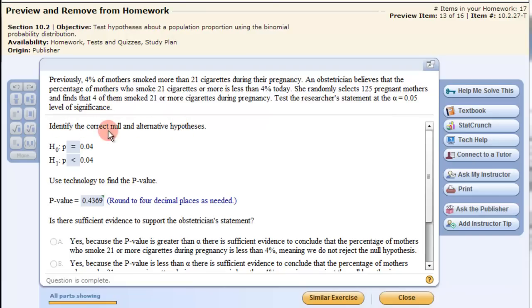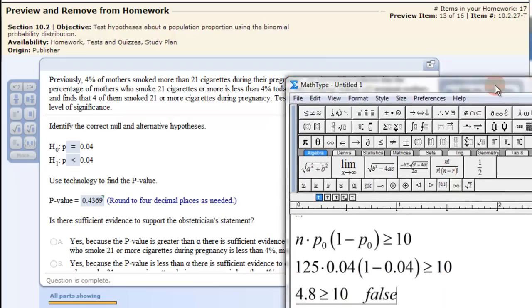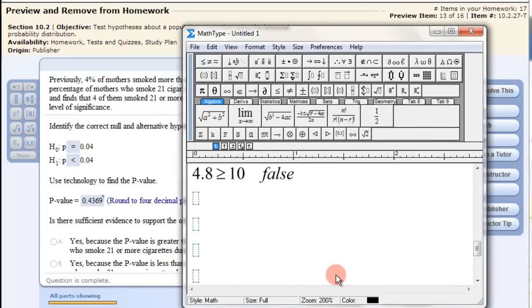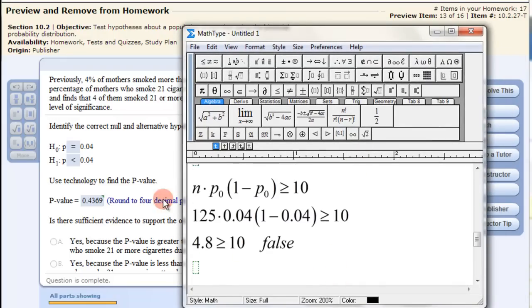So, we identify the null and alternative hypothesis. The null was that there was 4% at the beginning. Now we want to test whether it's less than 4%. And we first need to find this information here to see if it follows that we can use a normal distribution to justify this. And we find that after putting these values in, n is 125, p-naught is 0.04, that we get actually 4.8. This is not true.